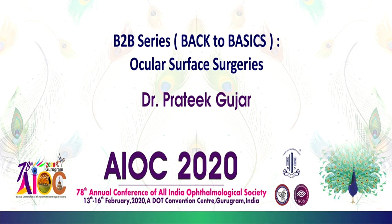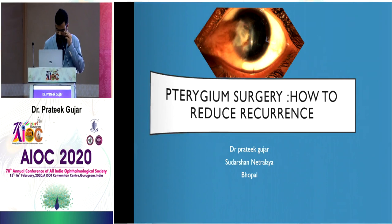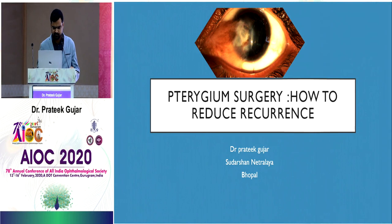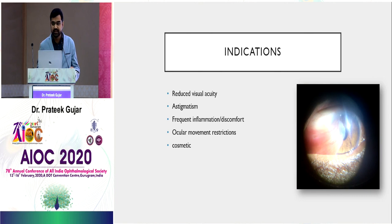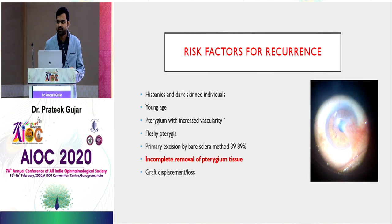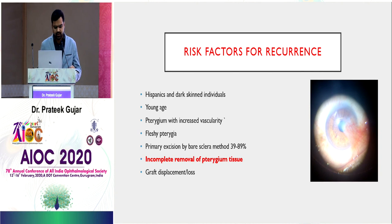Good morning everyone. Thanks Dr. Shreya for this opportunity. I will be speaking on pterygium surgery — how to reduce recurrences. The mainstay of treatment is surgical excision, with indications listed. The main concern is the risk of recurrence, which is always there. In practical terms, incomplete removal of pterygium tissue is the most common cause of recurrence — the primary surgeon may leave a bare sclera or incomplete original tissue.